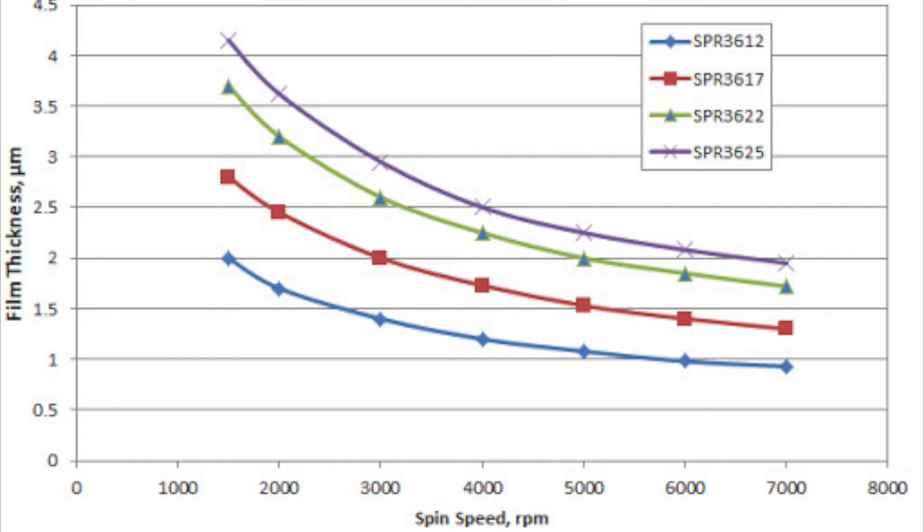One problem you might encounter is streaks in the resist. They usually look like little comets that fan out from the center towards the edge. Most comet-shaped streaks are due to dust particles that land on the surface prior to or during spinning. Avoid moving your arms around which can stir up dust. Step to the right before you hit the spin button just so your body's out of the air path.